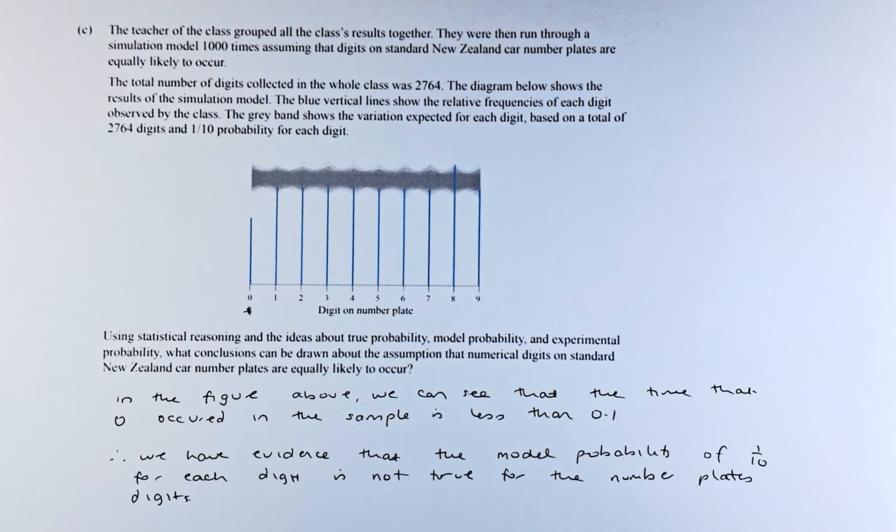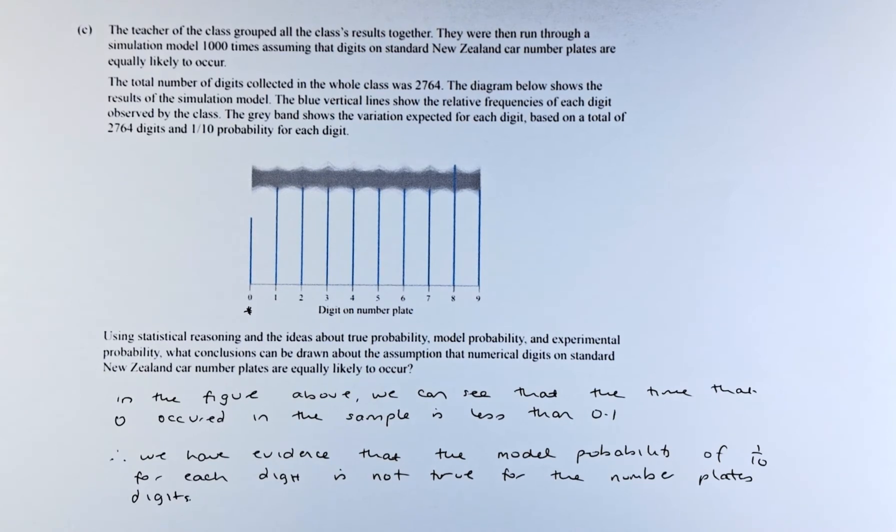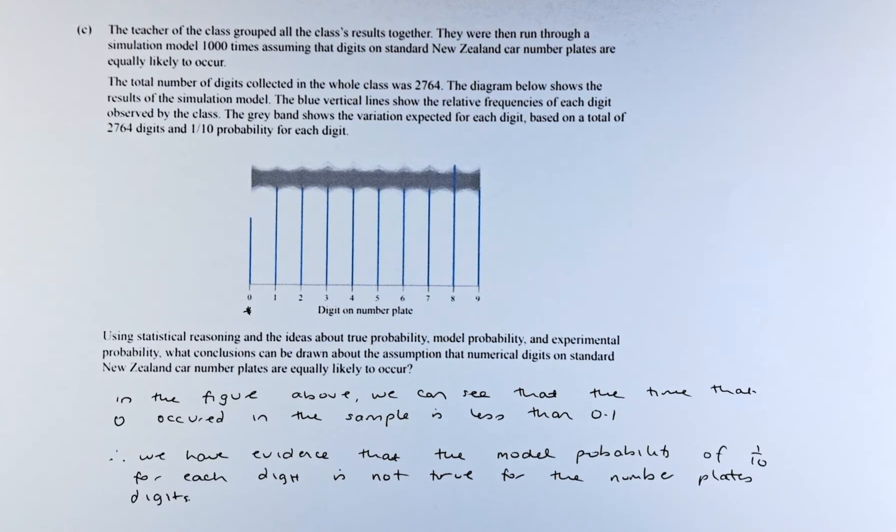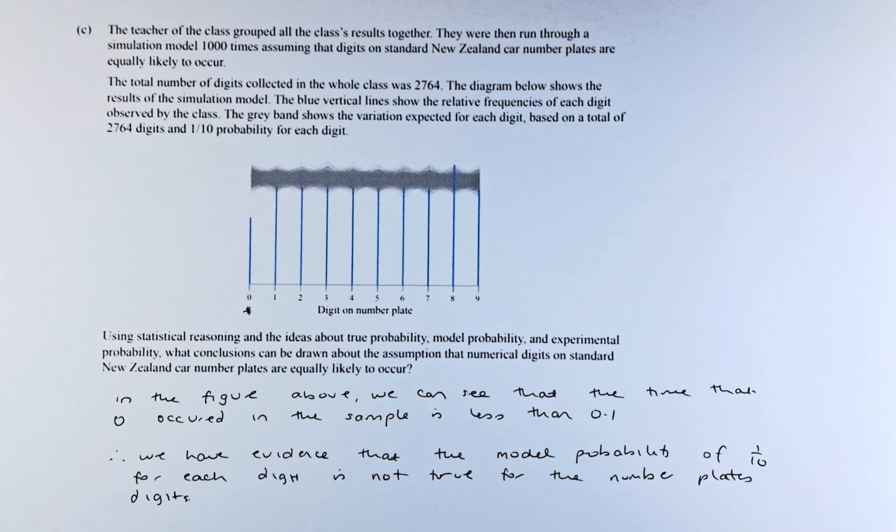The diagram below shows the result of the simulation model. The blue vertical line shows the relative frequency of each digit observed by the class. The grey band shows the variation expected for each digit based on the total of 2,764 digits.